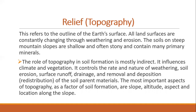Soils on steep mountain slopes are shallow and often stony, containing many primary minerals, as compared to soils on gentle slopes. The structure of the land surface determines how soil can be formed. The role of topography in soil formation is mostly indirect — it influences climate and vegetation, and controls the rate and nature of weathering, soil erosion, surface drainage, and the distribution of soil.